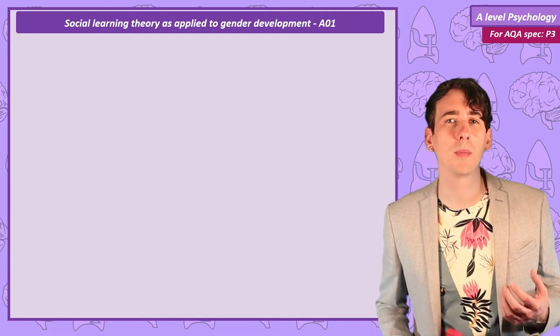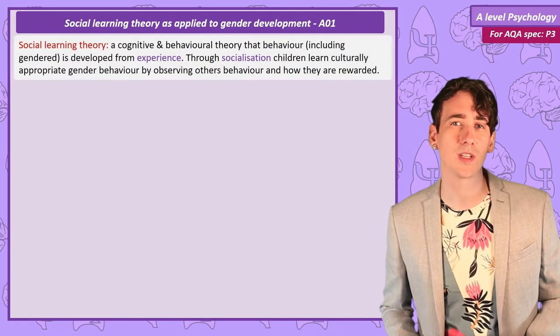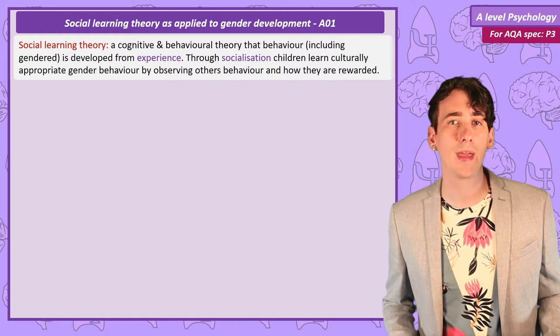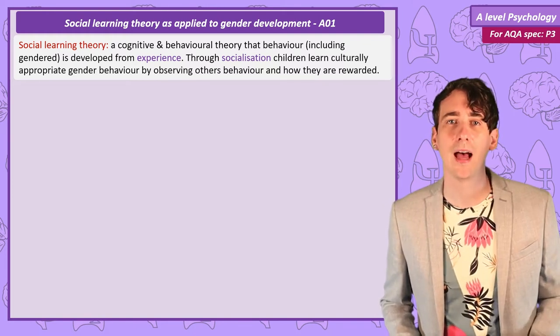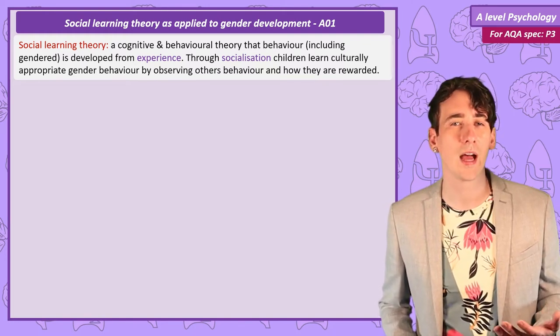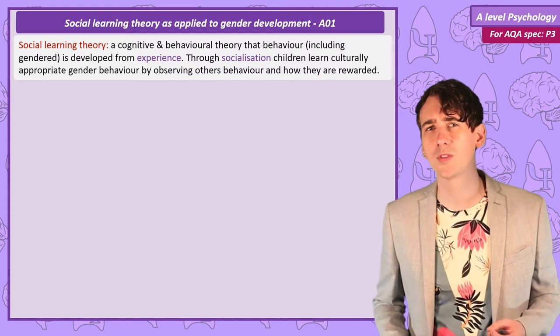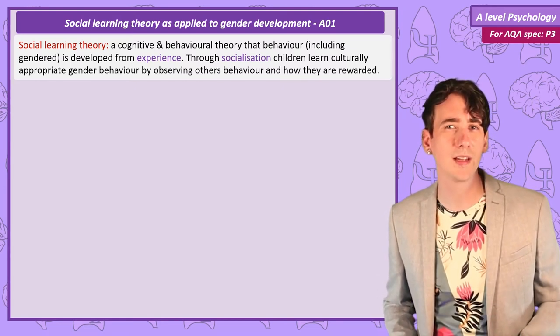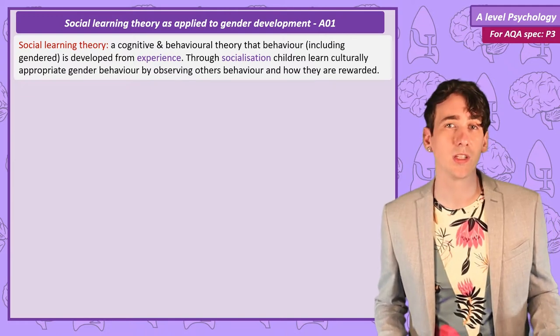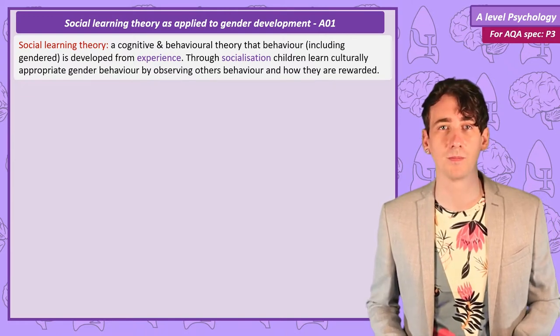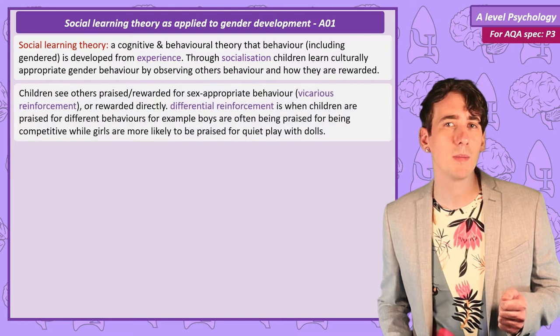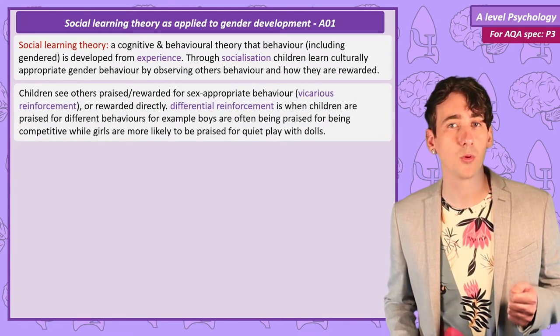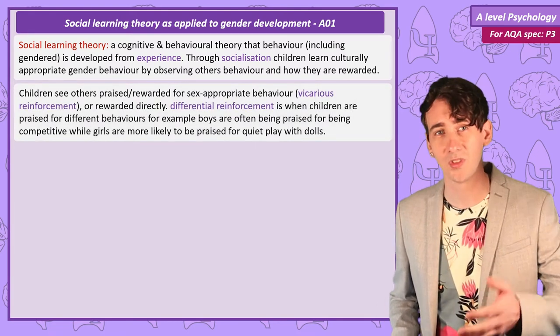Social learning theory is a combination of cognitive and behaviourist ideas. Its main idea is that we learn our behaviour through experience with the world, and this will include behaviour that is gendered. The process of socialisation is when children learn the norms and values of a society, and these vary massively depending on the culture they belong to.